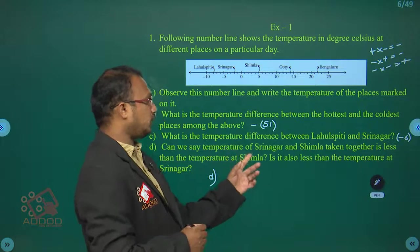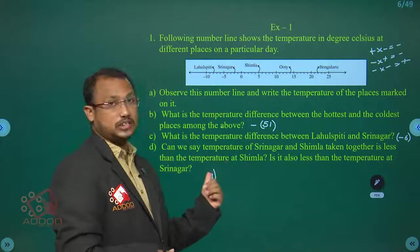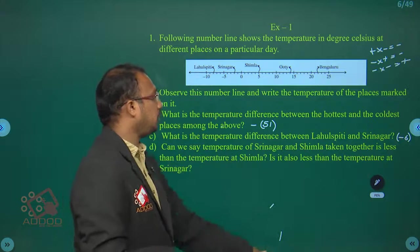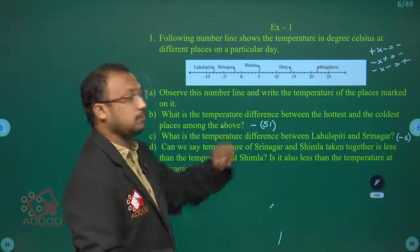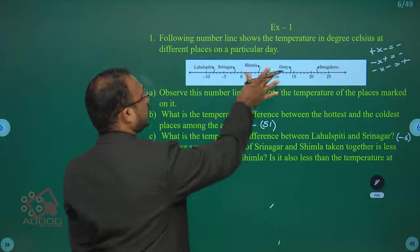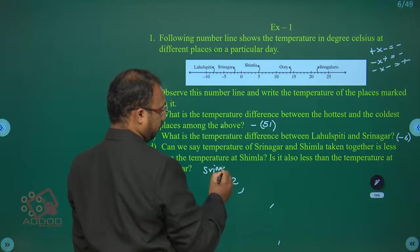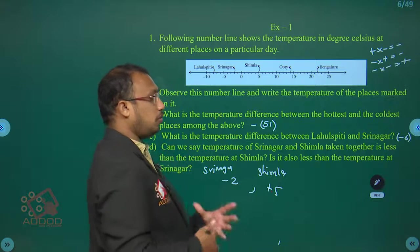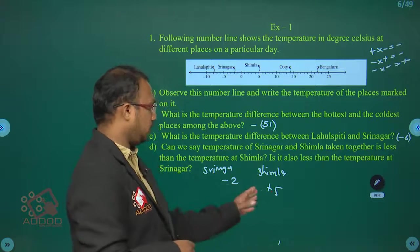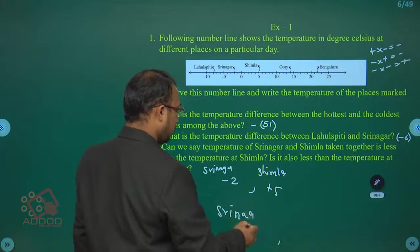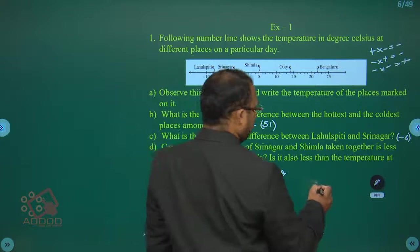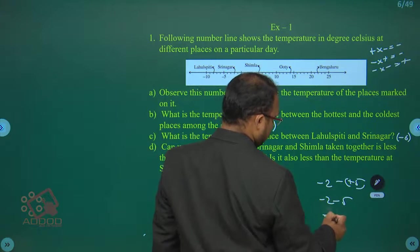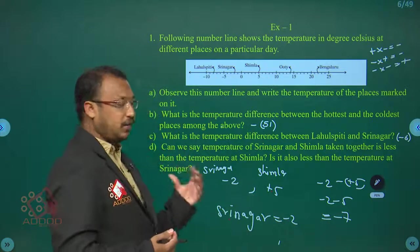Can we say the temperature of Srinagar and Simla taken together is less than the temperature at Simla? Srinagar is minus 2 and Simla is plus 5. Obviously Srinagar is colder. The combined difference: minus 2 minus 5 equals minus 7. So minus 7 is the result between Srinagar and Simla.